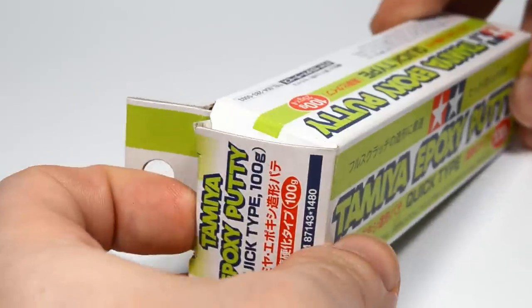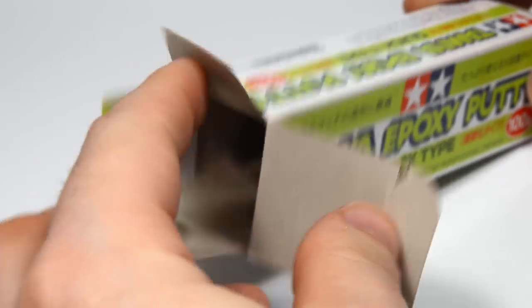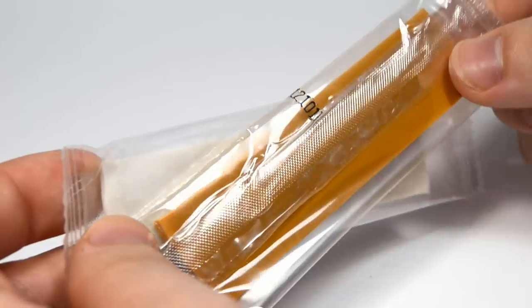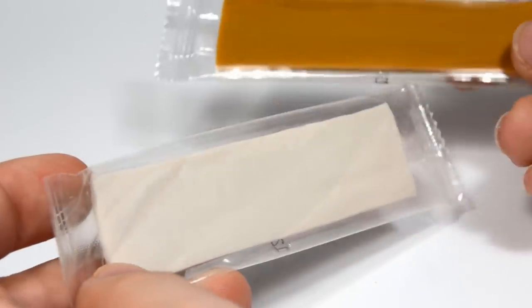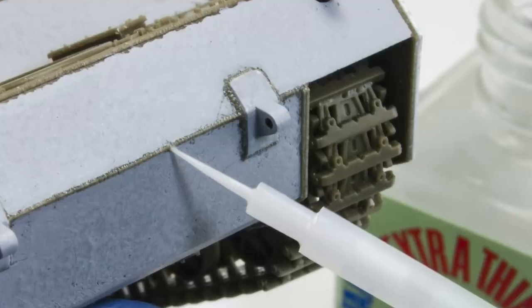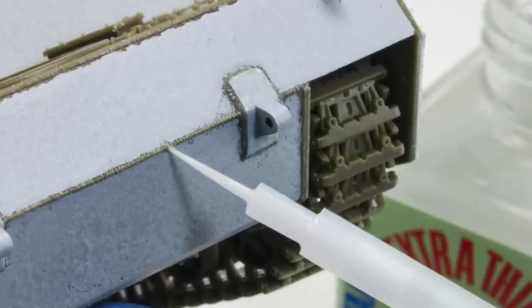In this video I'm going to show you how to create your own sick looking weld seams using two-part putty, which is in my opinion the best medium for the task, and the results are much better than using stretched sprue or lead wire.